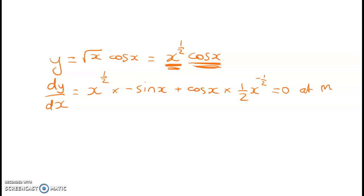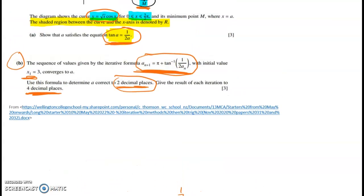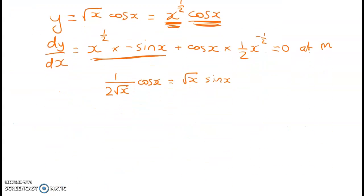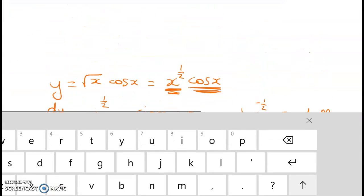Let's clean this up. I'm going to take this over to the right hand side. So we have one over two root x cos x is equal to root x sine x. Now to show that question, we can't just magically jump to tan x equals one over two x. We've just got to get there in a couple of steps. So let's first divide both sides by cosine.